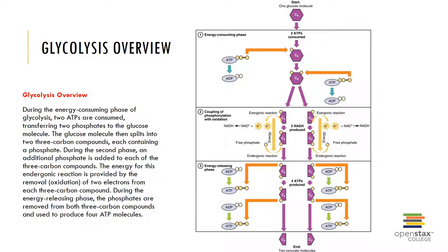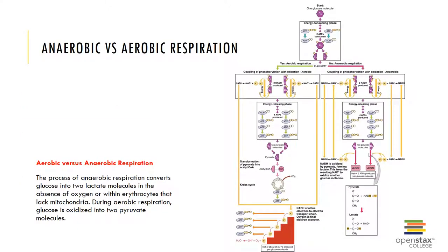The fate of the pyruvate molecules depends on the availability of oxygen. If no oxygen is present, the pyruvate molecules will be converted to lactic acid during the anaerobic process known as lactic acid fermentation. If oxygen is available, the pyruvate will be shuttled to the mitochondria to be used in the citric acid cycle. Here you can see the difference between anaerobic versus aerobic respiration, so the fate of glucose can vary depending on whether or not oxygen is present.